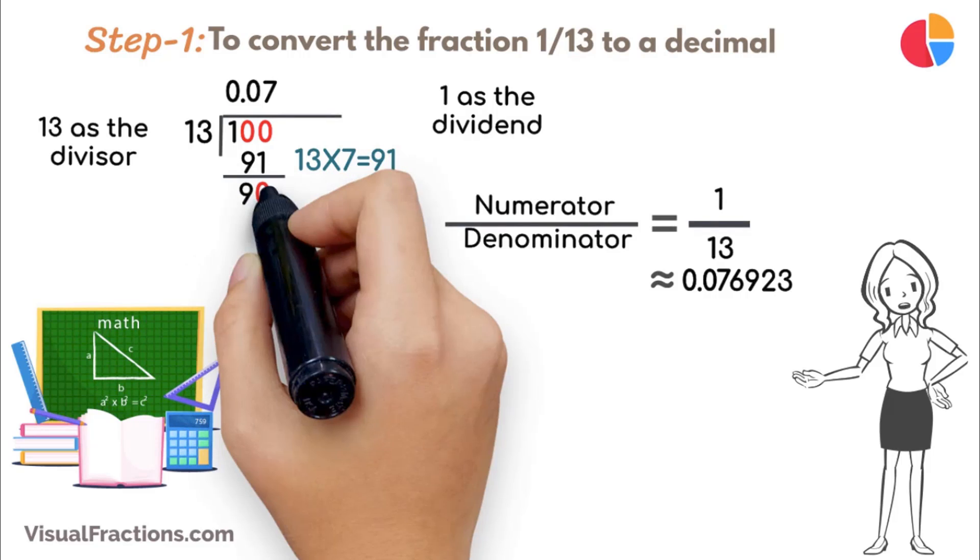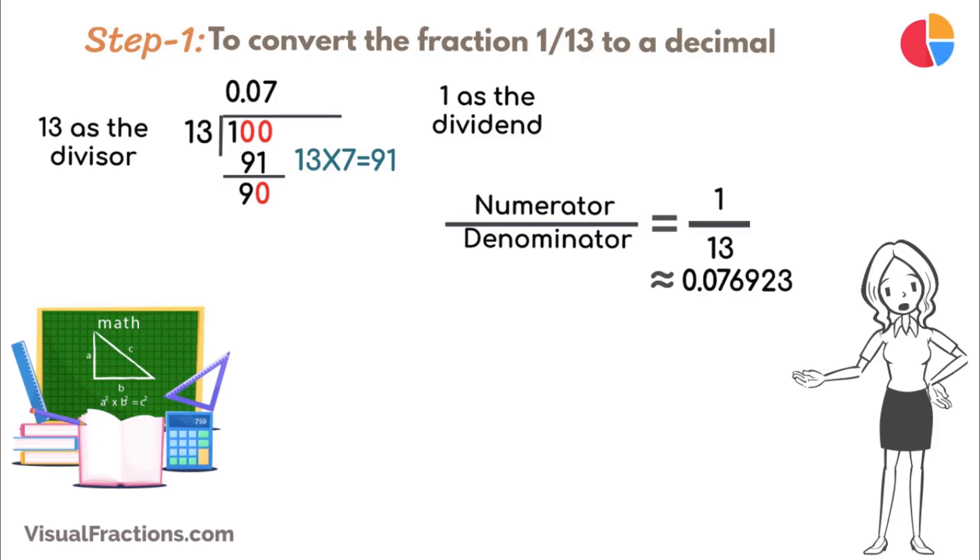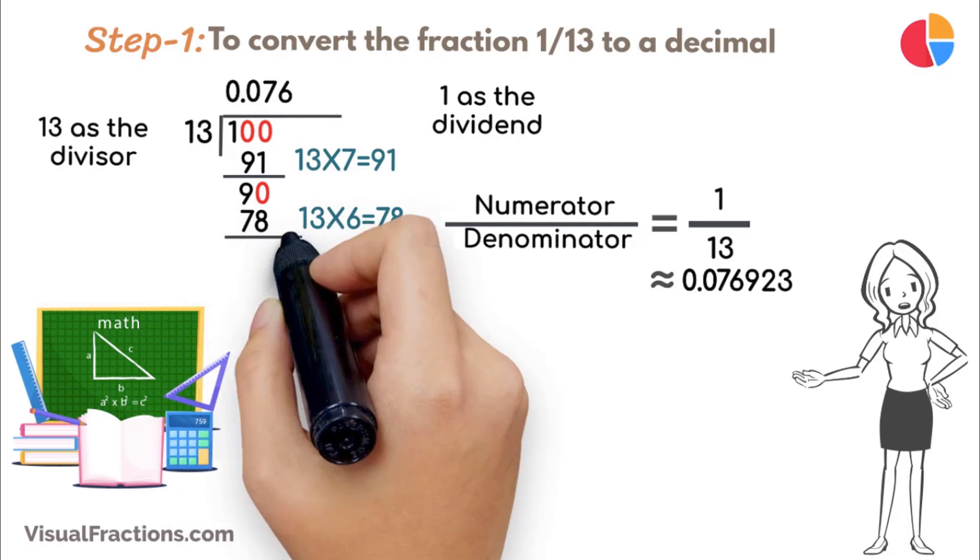Next, bring down another 0 to make it 90. 13 goes into 90 6 times, updating the quotient to 0.076. Multiply 13 by 6 to get 78, and subtract this from 90, leaving a remainder of 12.